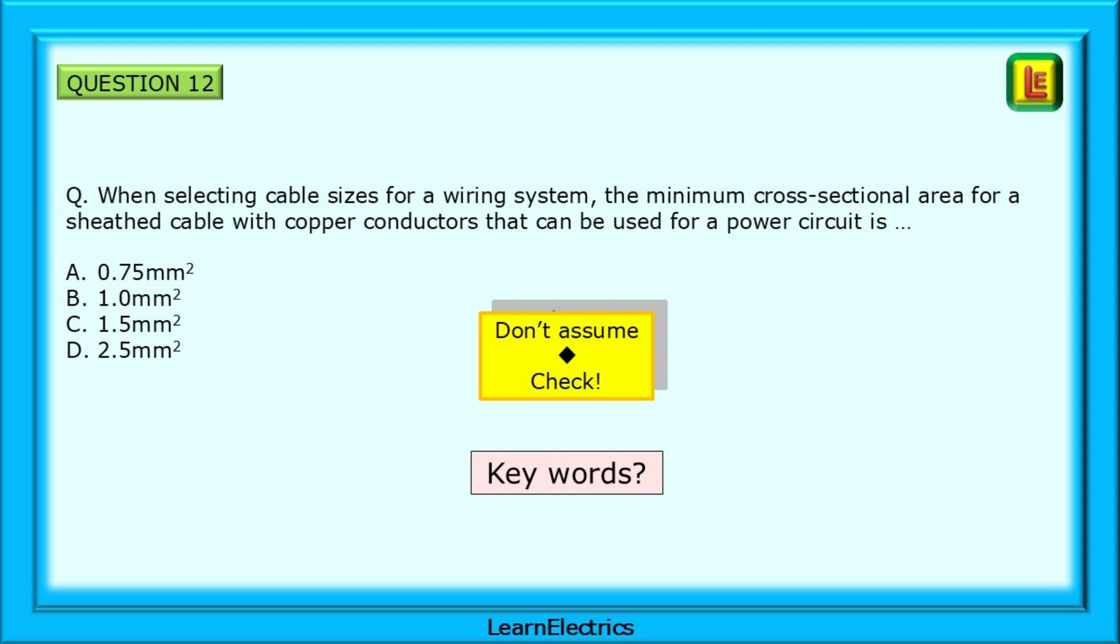Last question, question 12. When selecting cable sizes for a wiring system, the minimum cross-sectional area for a sheathed cable with copper conductors that can be used for a power circuit is... And don't assume that you know the answer. Check.